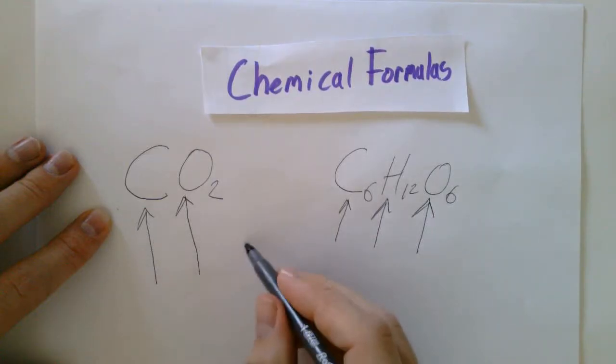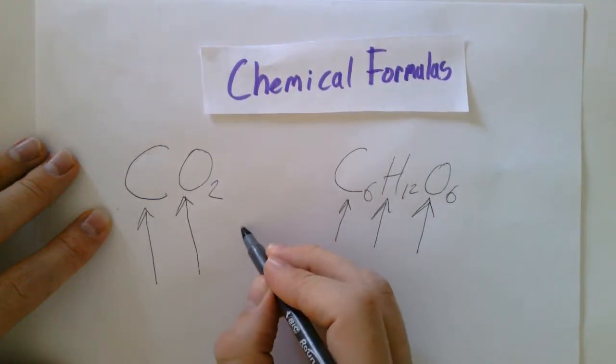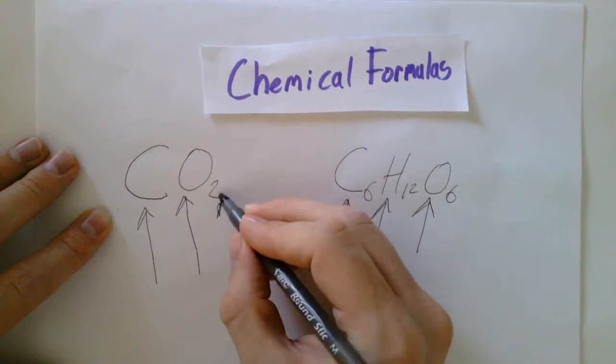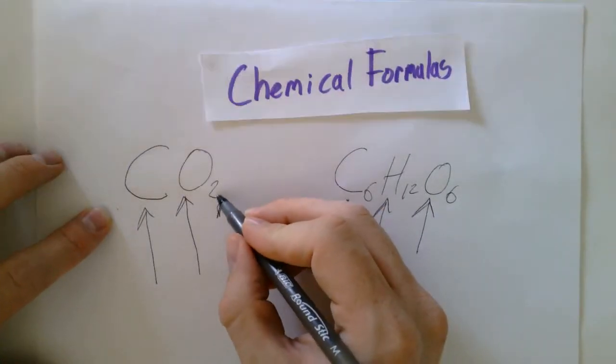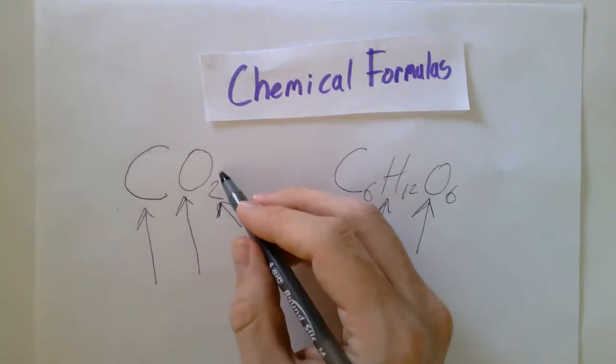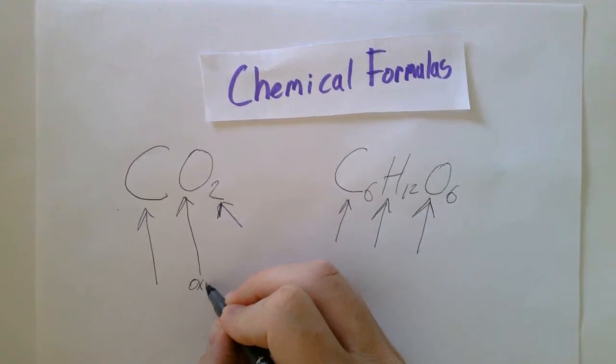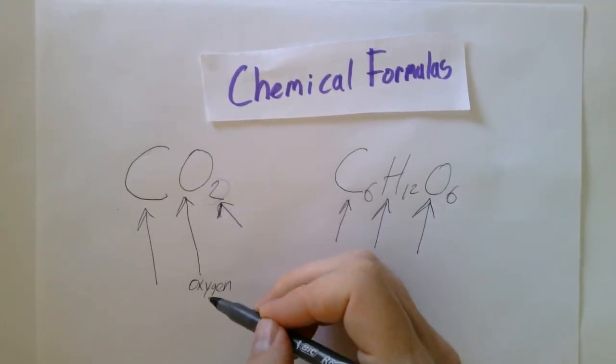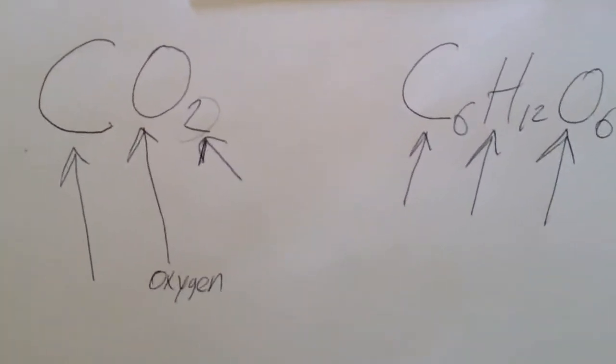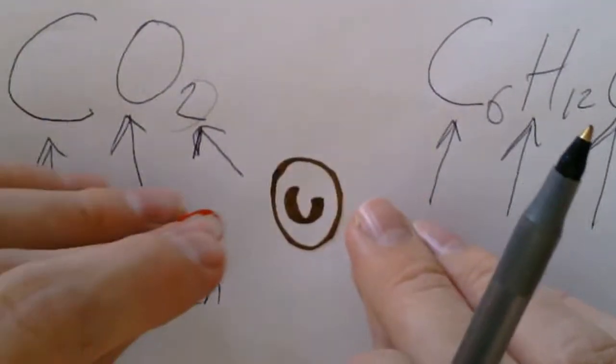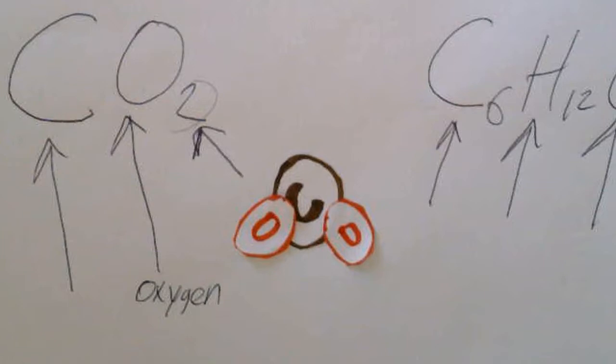Now we're given a second thing, so we have these numbers here. Now this little number is in subscript, meaning it's written small, and it tells you about the previous element. So with this oxygen here, we know we've got two of them. And so carbon dioxide would look something like this. You've got a carbon atom, and you've got two oxygen atoms.